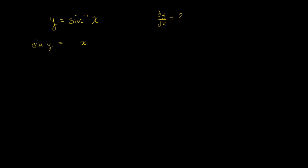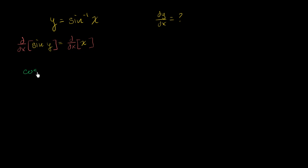We could take the derivative of both sides with respect to x. The derivative of the left-hand side with respect to x — here we just apply the chain rule — is going to be the derivative of sine of y with respect to y, which is going to be cosine of y, times the derivative of y with respect to x, so times dy/dx.